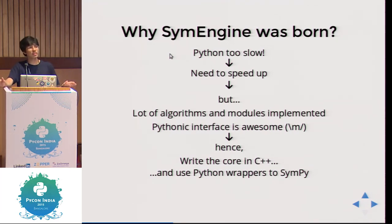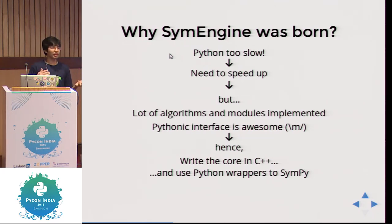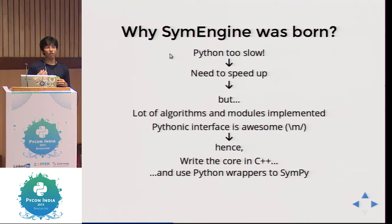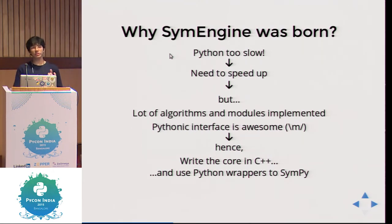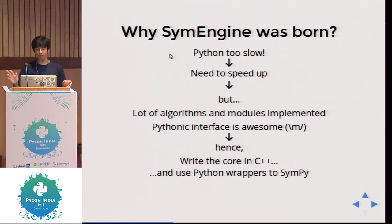The idea of SymEngine is to rewrite the core capabilities in C++, then have Python wrappers so you can use it from the Python shell. Once you have this, you can always replace the SymPy core with the SymEngine core. You can pass it optionally to SymPy, and then the other modules of SymPy would be much faster. That was the whole idea of why SymEngine was born.